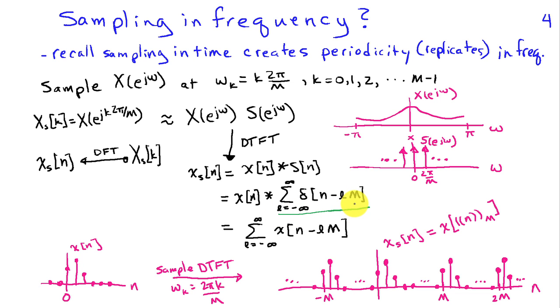So as before, we have an impulse train in frequency, we get an impulse train in time, and these impulses are spaced by capital M. So they're spaced by 2 pi over M in frequency, they're spaced by M in time, and we have this inverse relationship that we've seen before.